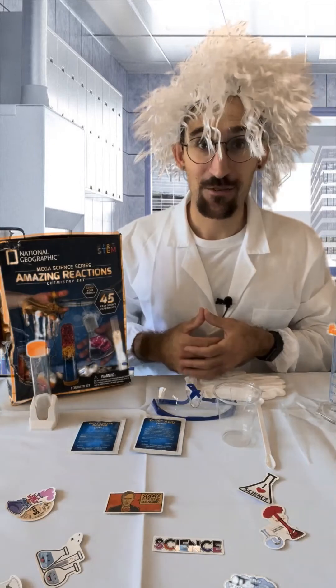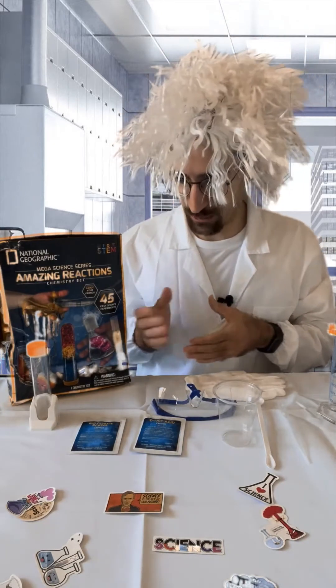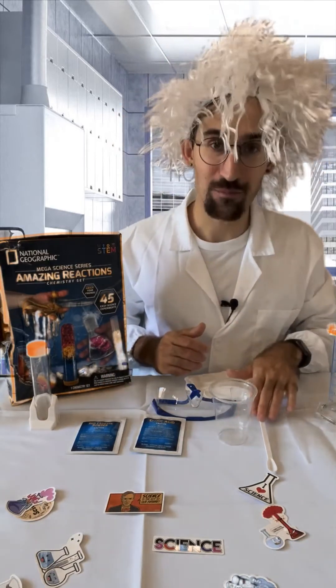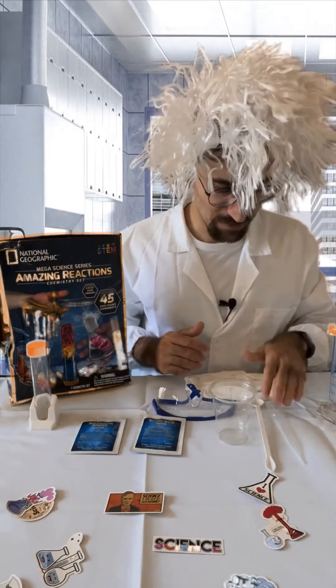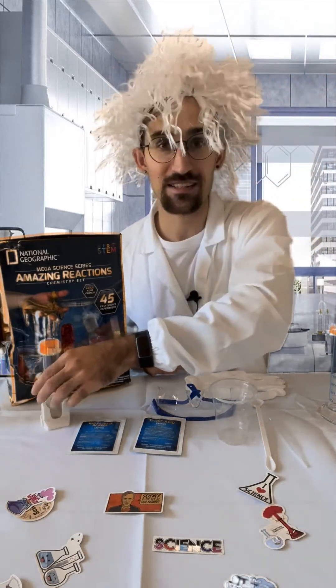I've taken all the needed items out from the chemistry kit including red cabbage powder, citric acid, a cup, our measuring spoons small and medium, a pipette, as well as one of our test tubes here.